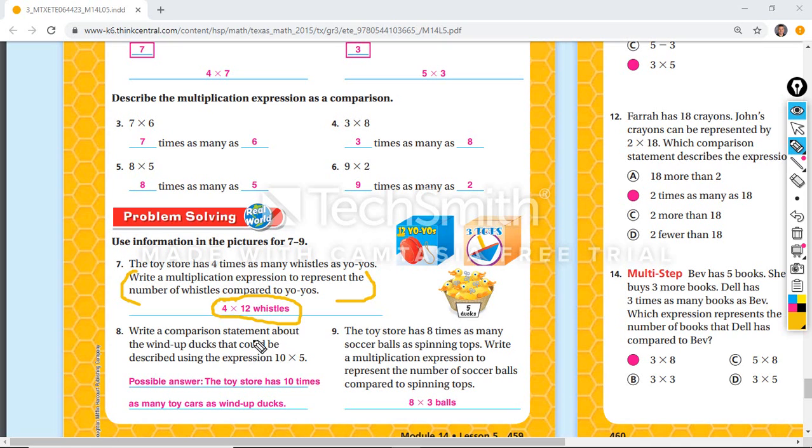So the next one is write a comparison statement about the wind-up ducks that could be described using the expression eight times five. So the ducks, there's five of them. So possible answer, the toy has something more than or ten times as many as the wind-up ducks.